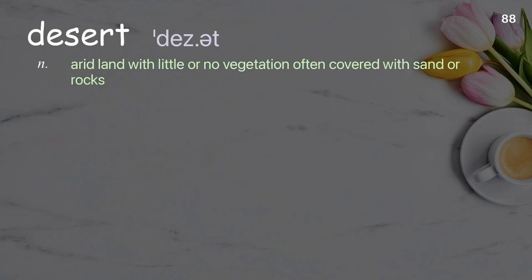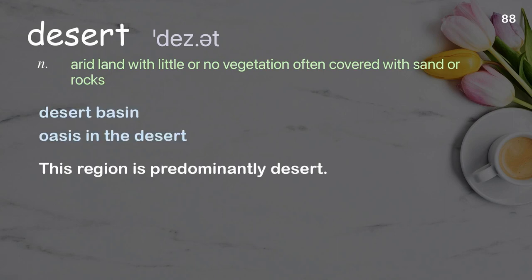Desert: arid land with little or no vegetation, often covered with sand or rocks. Examples: desert basin, oasis in the desert. This region is predominantly desert.